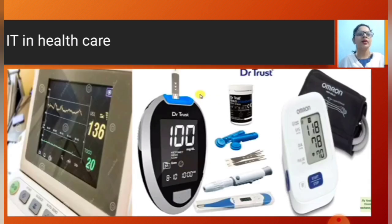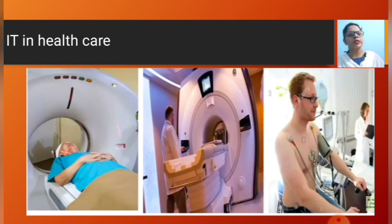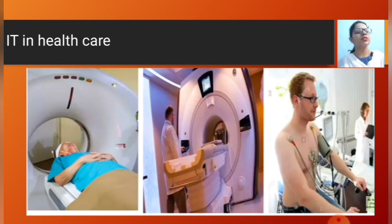You can see here there is a computerized machine for ECG. You can also see an ECG machine and CT scan machine — with CT scan you can image the whole body. All these machines are computerized.